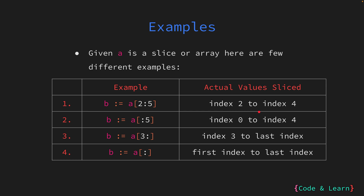In the second example the starting index is empty, meaning we are not specifying the starting index, which means we want to start slicing from index 0. So we want values from index 0 up to 5, again excluding index 5. The values copied into b would be from index 0 to index 4.